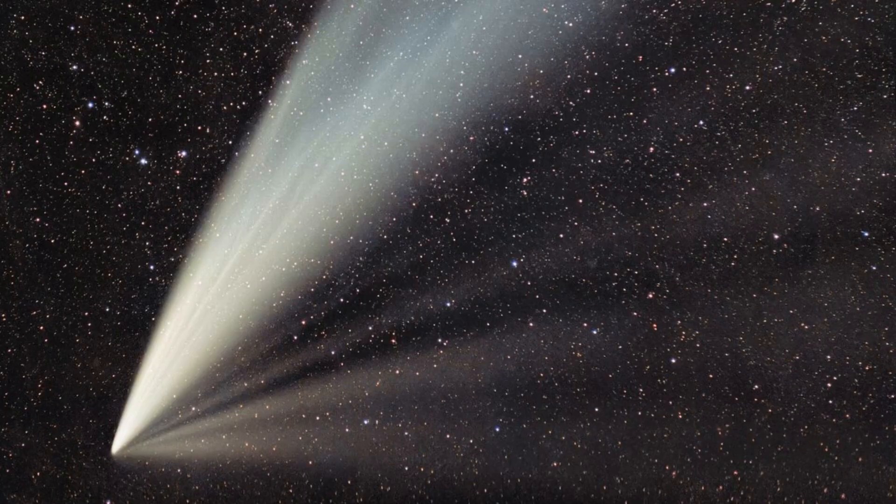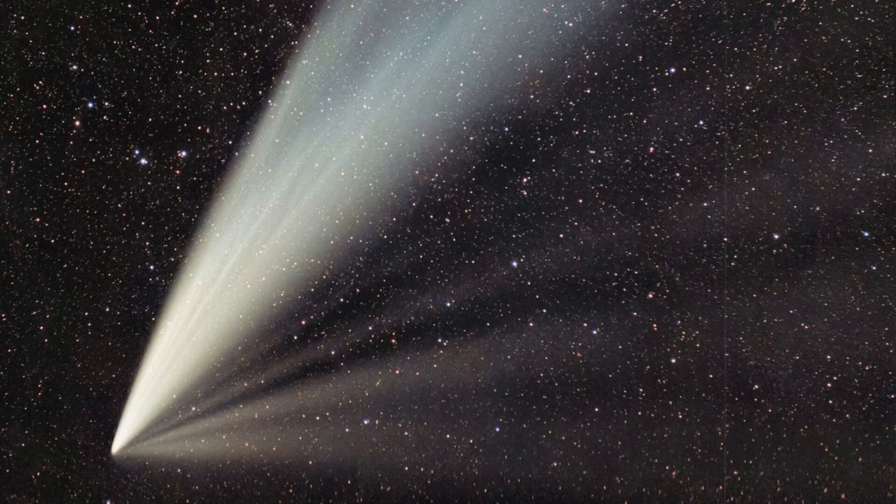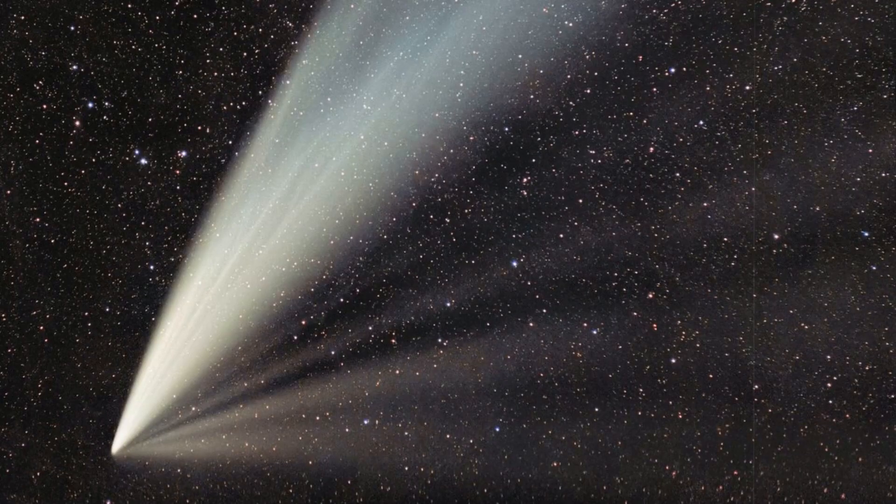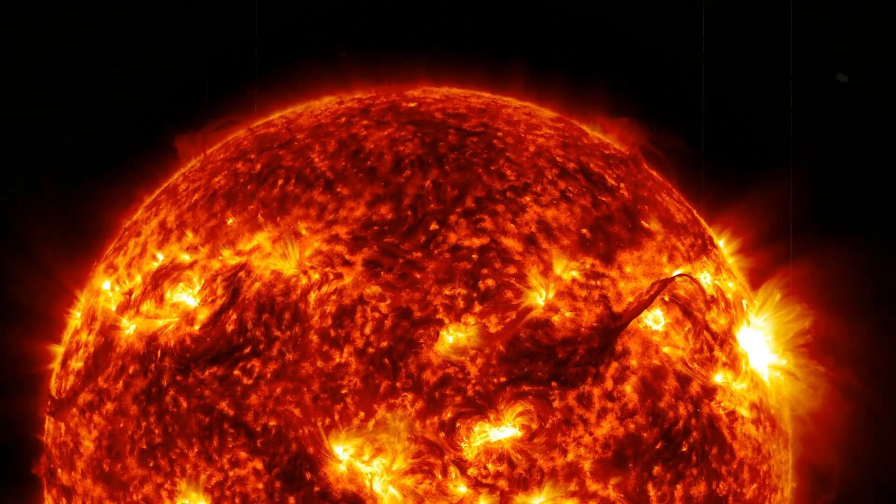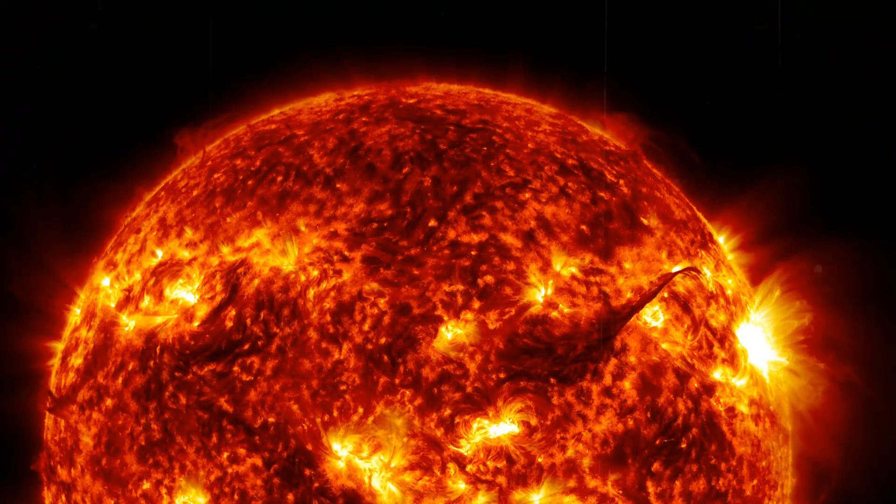In 1843, a brilliant comet dove near the Sun and produced one of the longest tails ever recorded, stretching more than 200 million kilometers. Just days after its passage, observers noted violent solar activity.